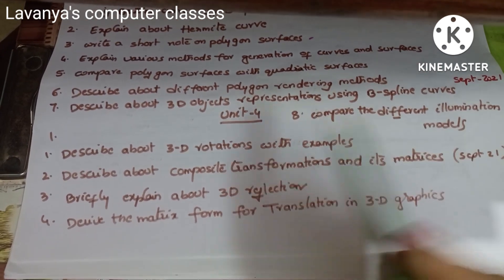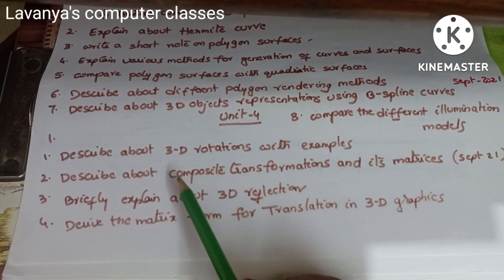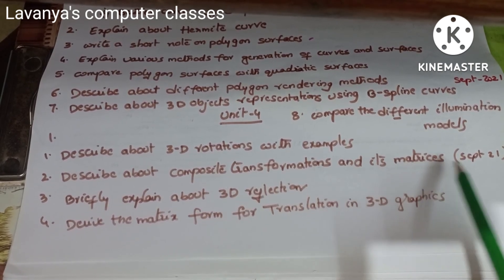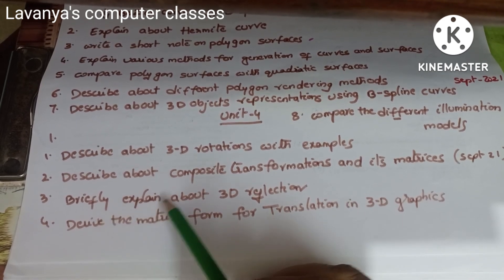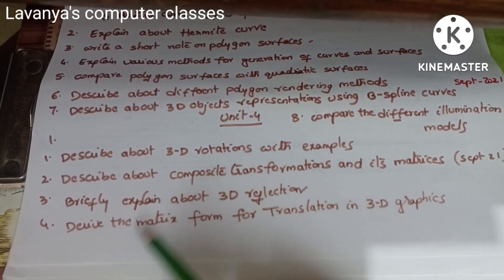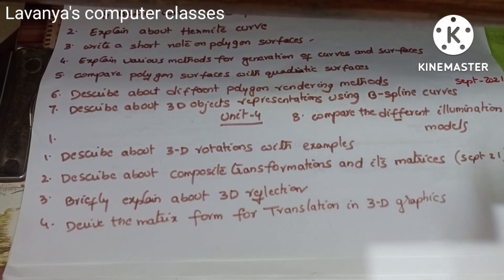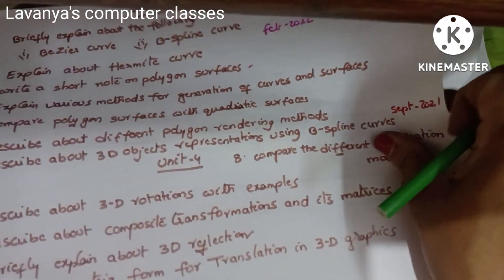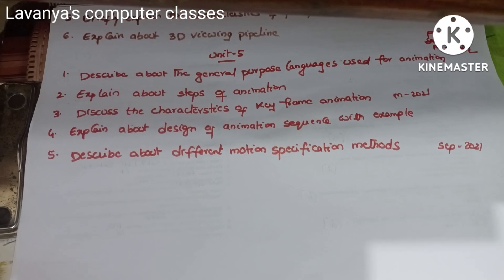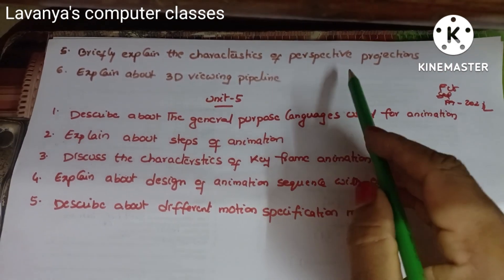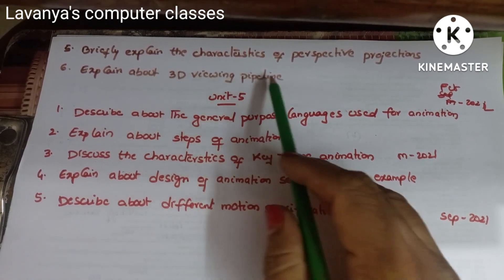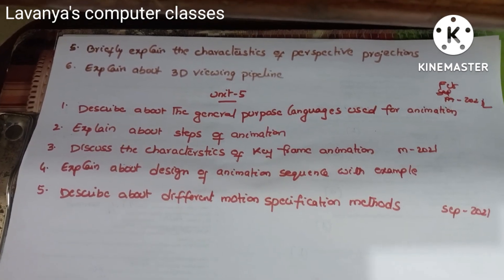Unit 4 important questions: Describe about 3D rotations with examples. Describe about composite transformations and their matrices — September 2021 question. Briefly explain about 3D reflection. Derive the matrix form for translation in 3D graphics. Also, briefly explain the characteristics of perspective projections, and explain about 3D viewing pipeline — which is an important question.